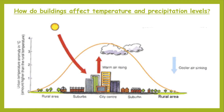So what you've got here — apologies it's a little blurry, I did scan this from the textbook. You've got temperature levels at the side. Basically this is a cross section: if you've gone from the countryside into a town or city through the suburbs on the outer edge of the urban area, through the city centre, back out the other side through the suburbs and back into the rural surrounding area.